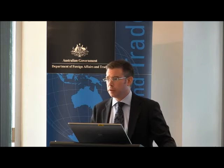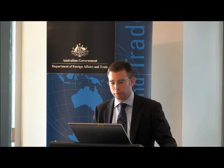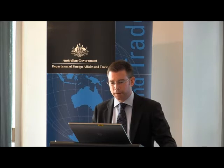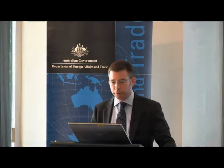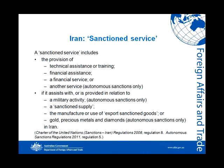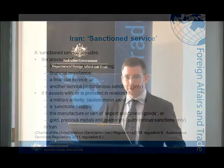Turning to another sanctions measure included in both UNSC and Australian autonomous sanctions in relation to Iran — the provision of a sanctioned service. A sanctioned service includes the provision of technical assistance or training, financial assistance, a financial service, or another service if it assists with or is provided in relation to a military activity, a sanctioned supply, the manufacture or use of export sanctioned goods, or gold, precious metals and diamonds — all in relation to Iran.